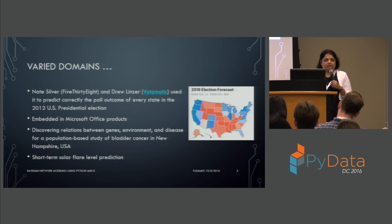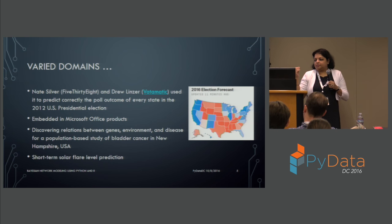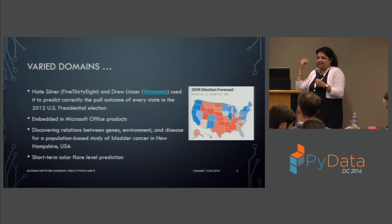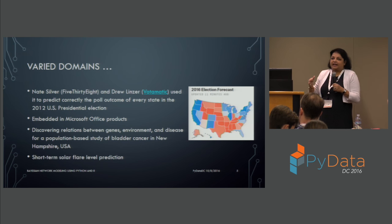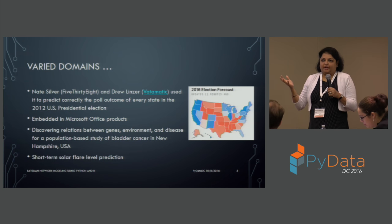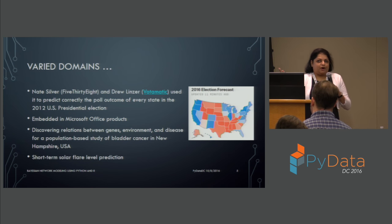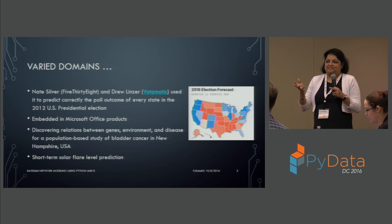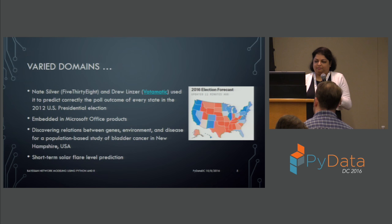Bayesian modeling is also used in astronomy, particularly solar science, for predicting solar flare predictions. The sun is dynamic and solar flares occur from time to time, and Bayesian networks help predict that. From these examples you can see there are varied fields and domains where Bayesian network is being used. Hopefully this talk will give you an introduction so that when you have a problem to solve, you can analyze whether Bayesian modeling makes sense for it.